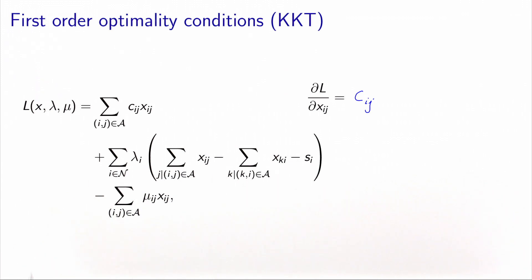For the second term, we have two cases where xij is involved. For node i with a plus, the derivative will be lambda i. And for node j with a minus, the derivative will be minus lambda j. And then for the last term, we have minus muij. And this must be equal to zero.